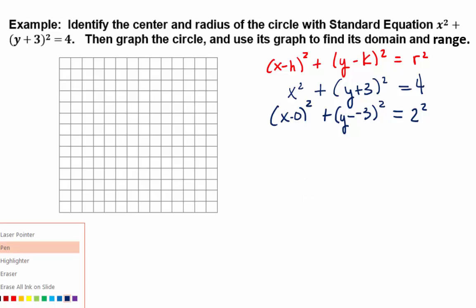This way, we can see directly that h matches up with 0, k matches up with negative 3, and r matches up with 2. You see that?